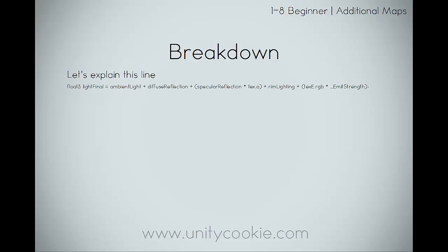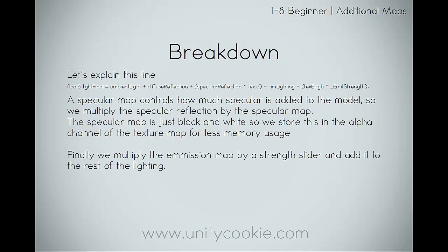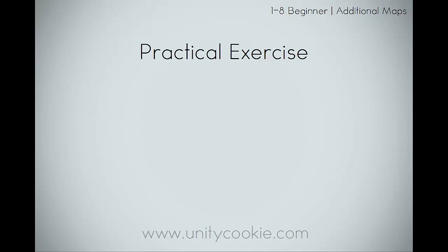Let's do a quick breakdown. The specular map controls how much specular is added to the model, so we multiply the specular reflection by the specular map. The specular map is just a black and white texture, so we actually store this in the alpha channel of the texture map so it uses up less memory. Finally, we multiply the emission map by a strength slider and add it to the rest of the lighting.